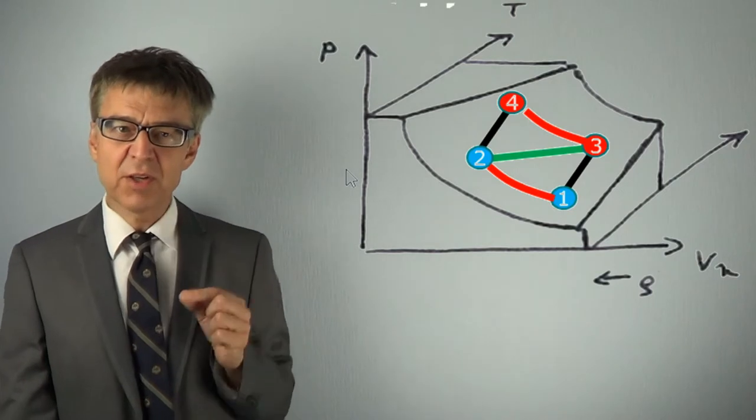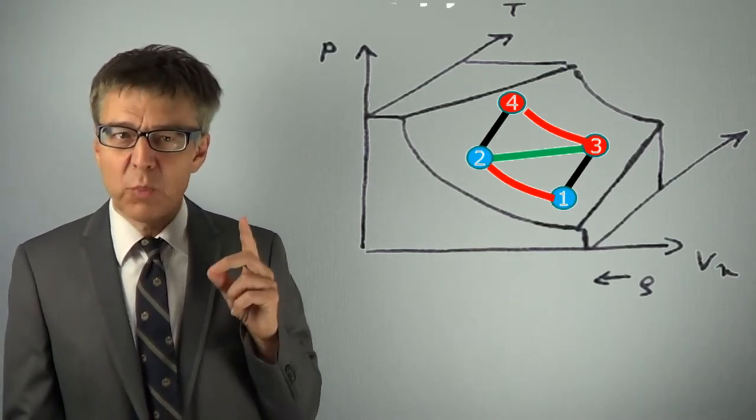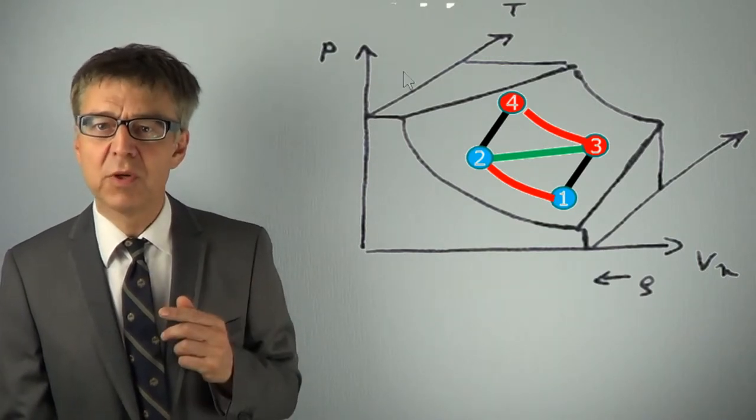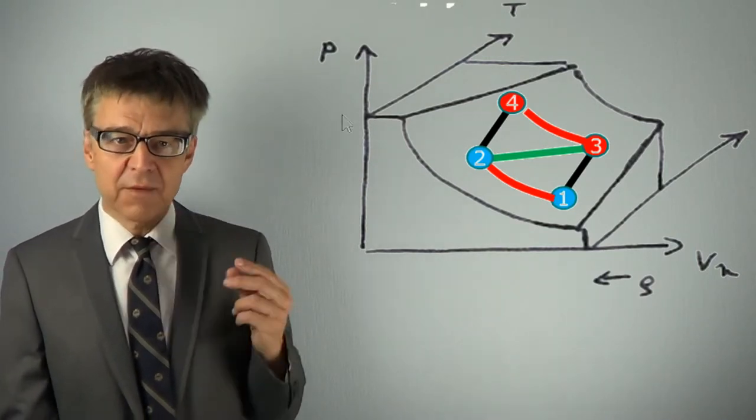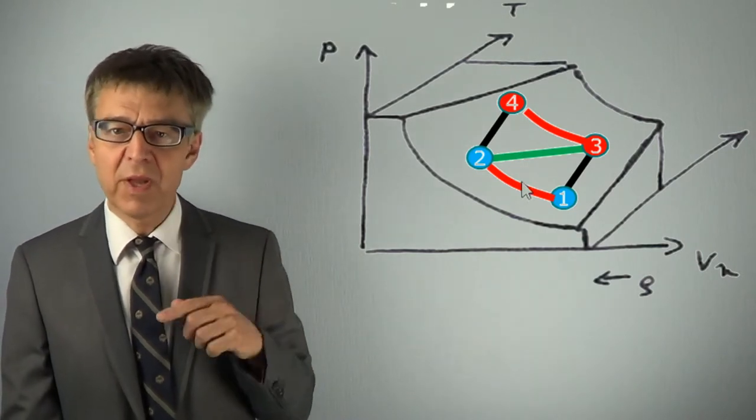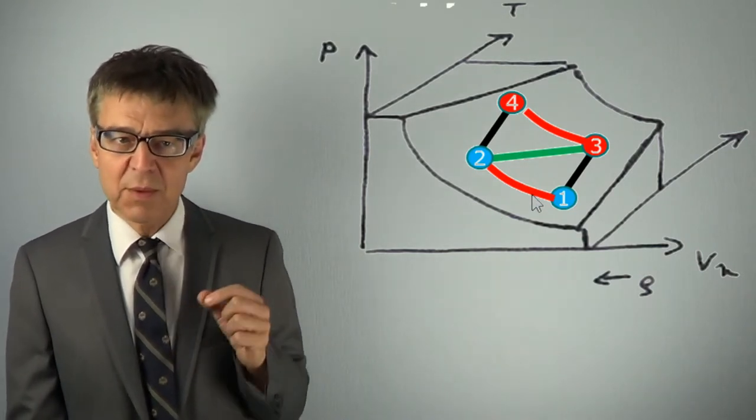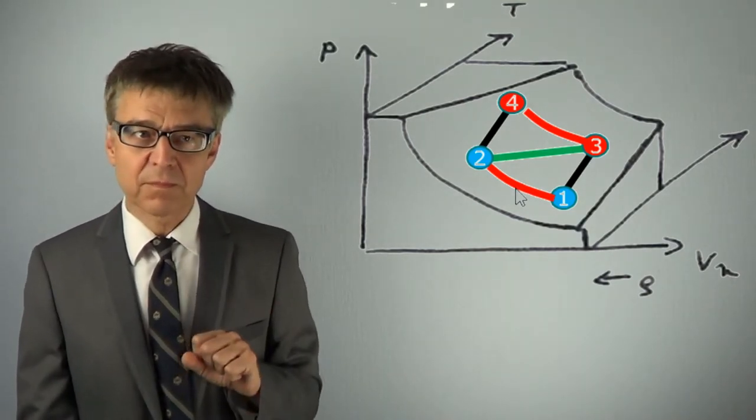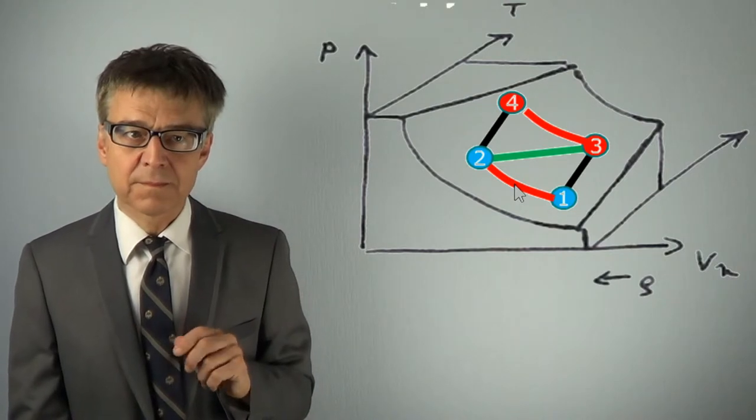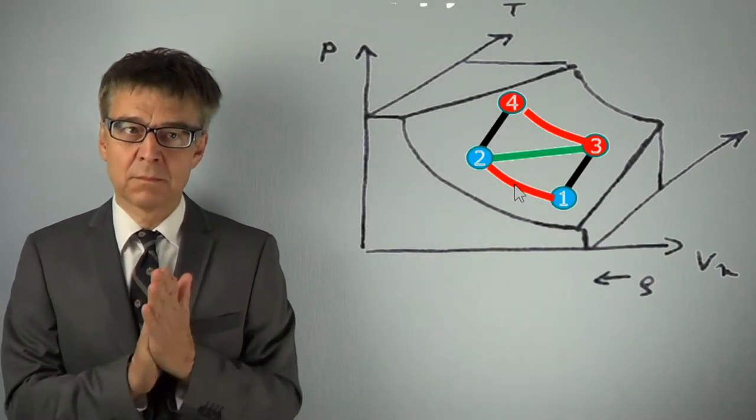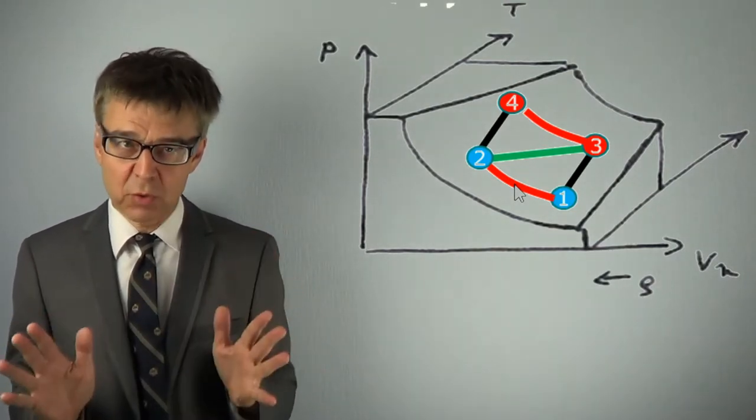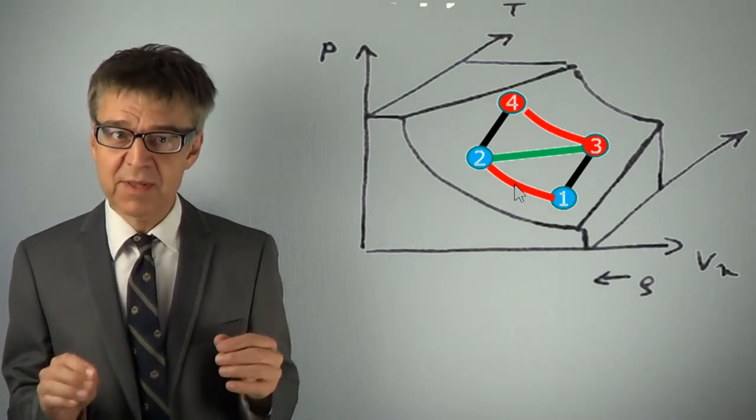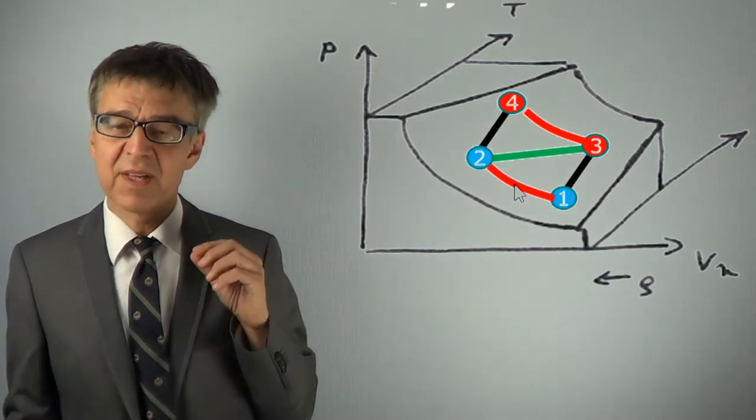This does not hold for process variables. It may well be that the work on the path 1, 2, 4 is different from the work on path 1, 3, 4. In terms of work and heat, you always have to specify the exact path. Path makes no difference for state variables. Discussing process variables, specification of the path is essential.